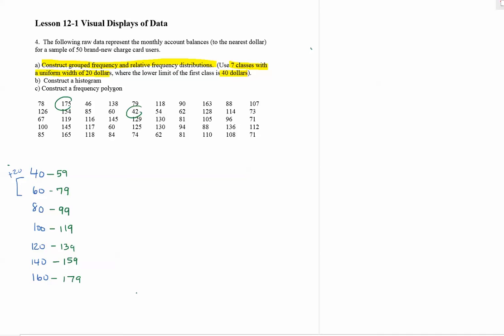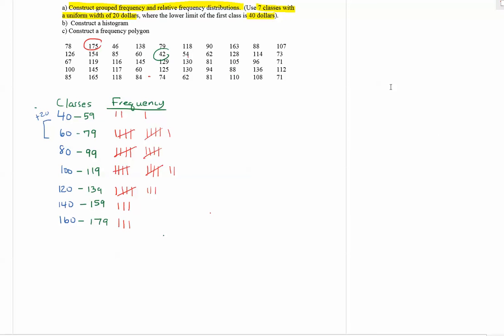Now we want to do a grouped frequency distribution first. So these are my classes and then I'm going to list my frequencies. So tally up how many are going to be in each class and then total that up and put that in each column. Okay, so what I've done so far is I've got everything tallied up, so now I'm going to list my frequencies.